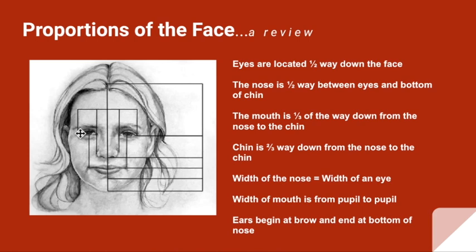There are five eyes across the width of the face. There is one eye width in between both eyes. The nose is one eye width. In other words, the width of the space between the eyes.